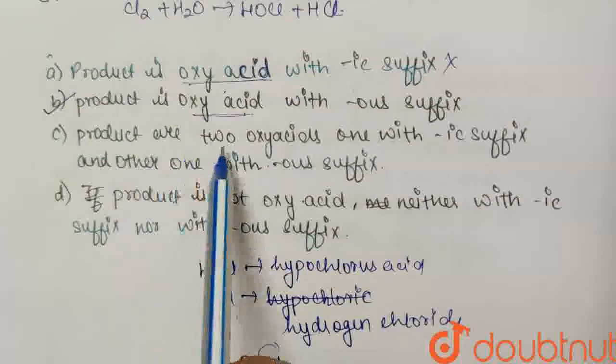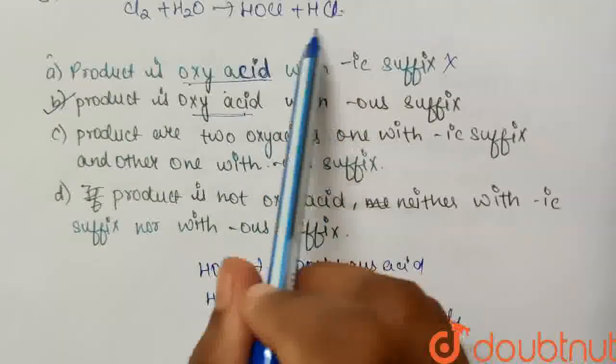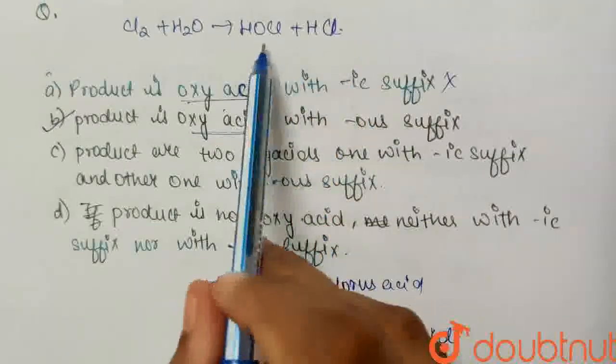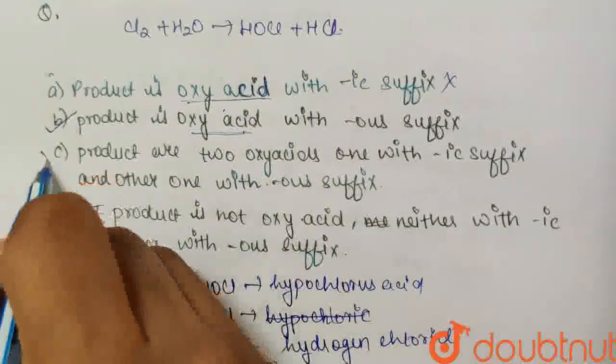Third, the products are two oxy acids. We have seen that two acids are formed, but only one of them is oxy acid and the other is a normal acid. So this option is incorrect.